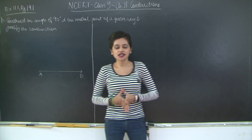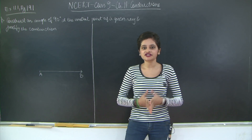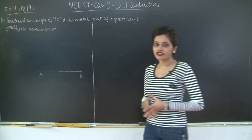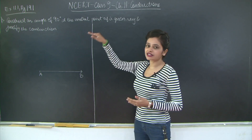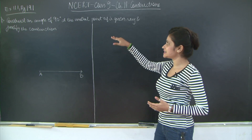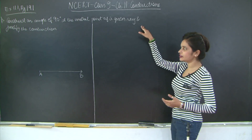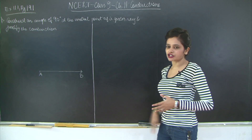Hello students, let us start with exercise 11.1 of chapter 11 constructions. The first question: you need to construct an angle of 90 degrees at the initial point of a given ray and justify the construction.